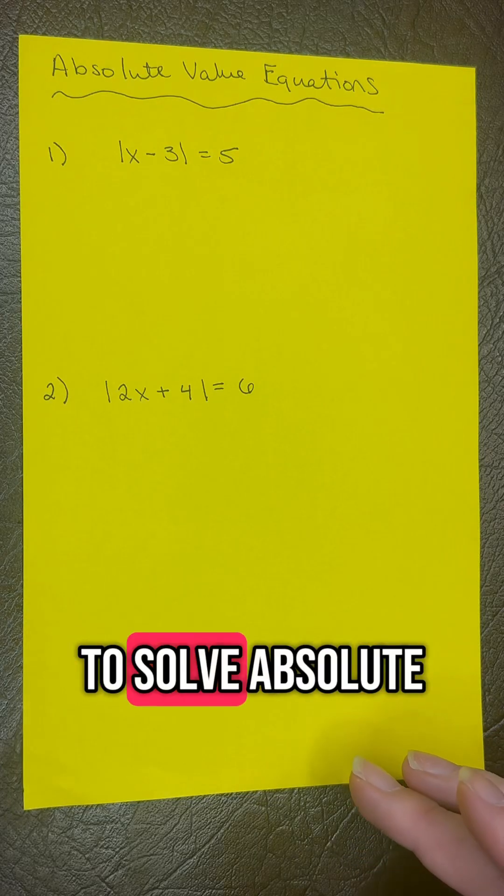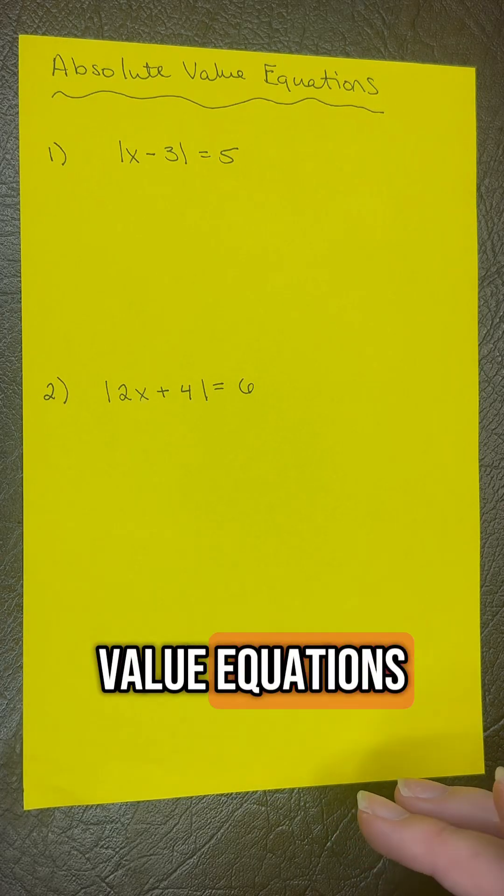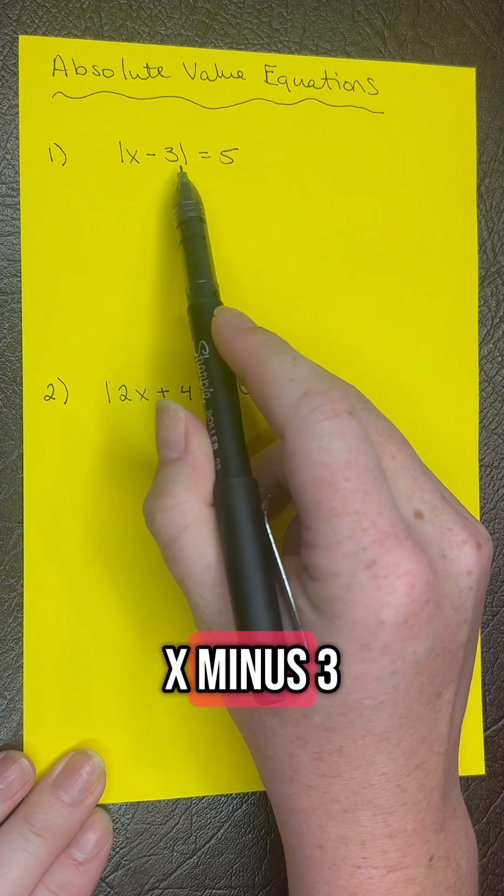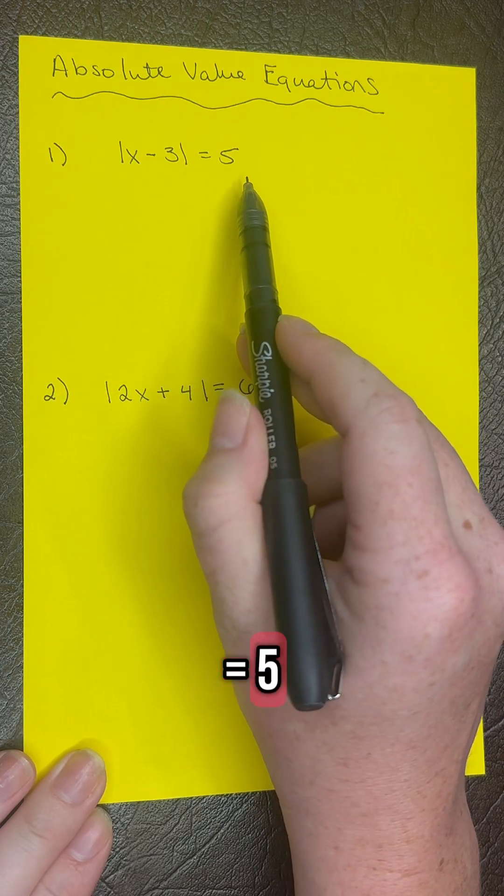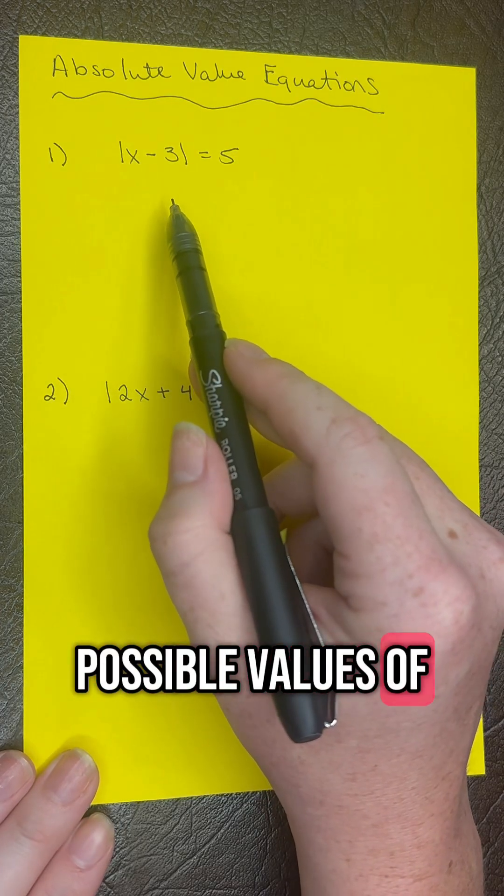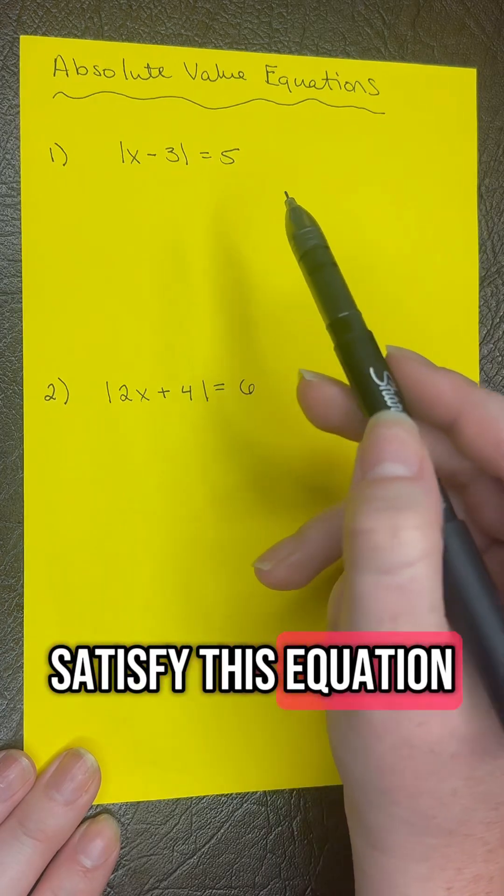Today we're going to learn how to solve absolute value equations. Let's take a look at number one: we have the absolute value of x minus 3 equals 5. We want to figure out what possible values of x satisfy this equation.